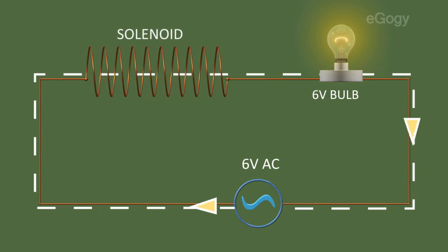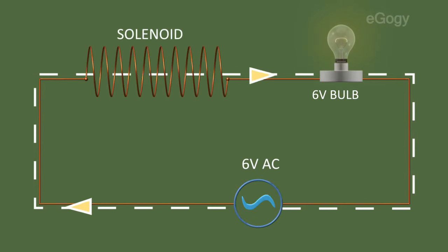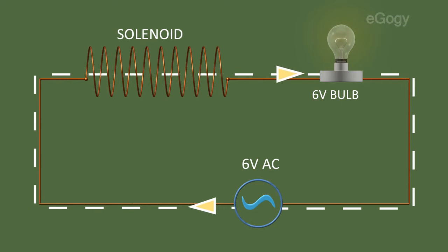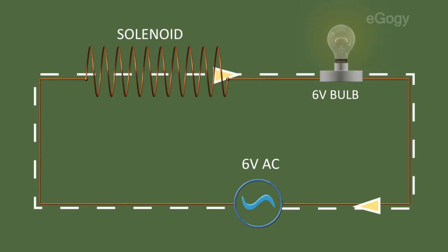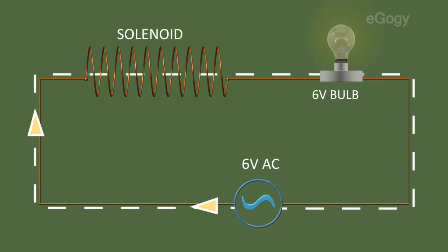Convert this long wire to a solenoid and observe the change in intensity of the light. We can see that the intensity is decreasing. Why does it happen?